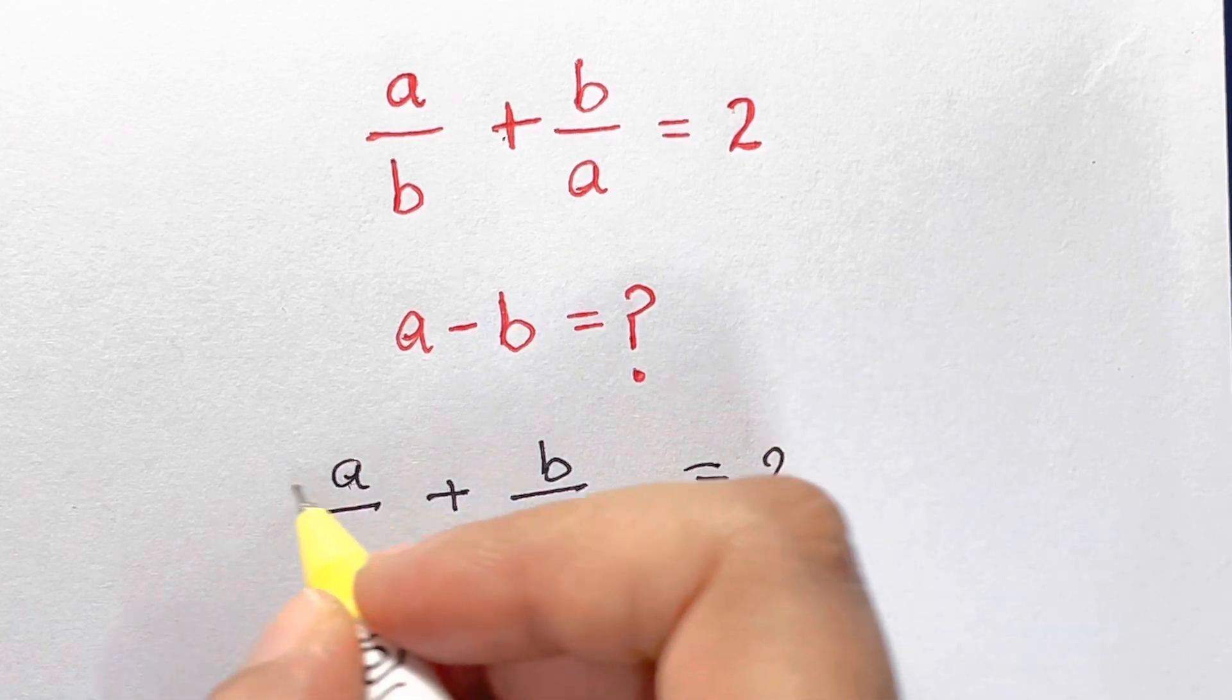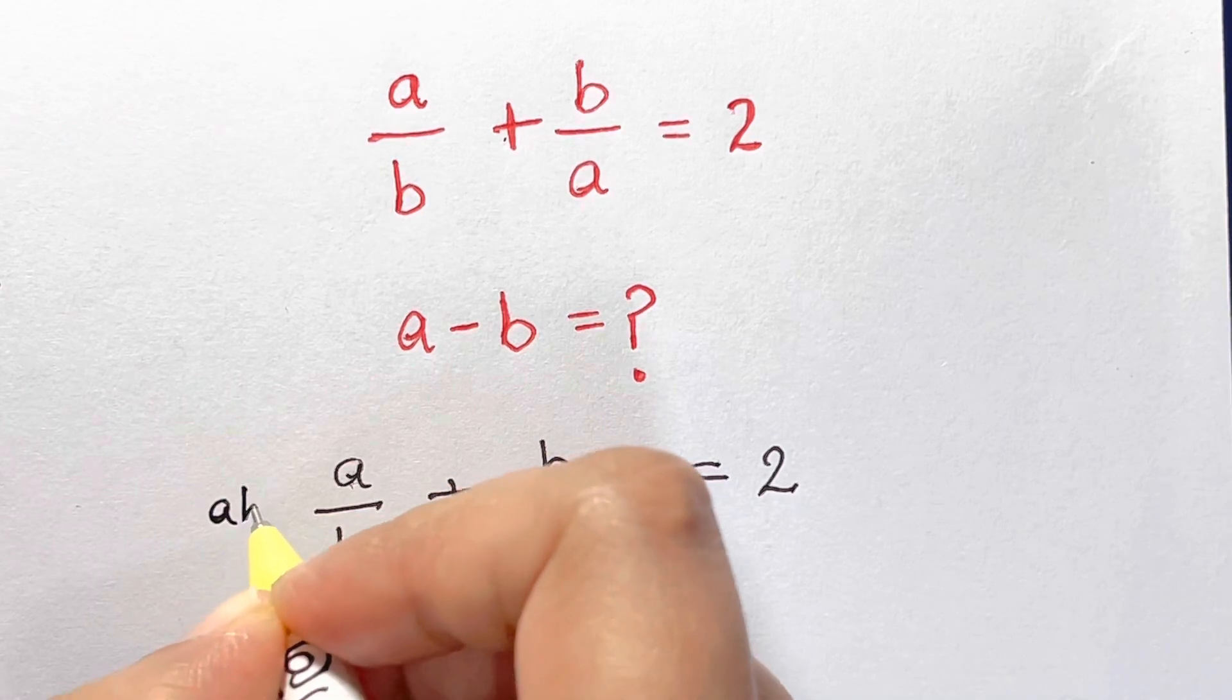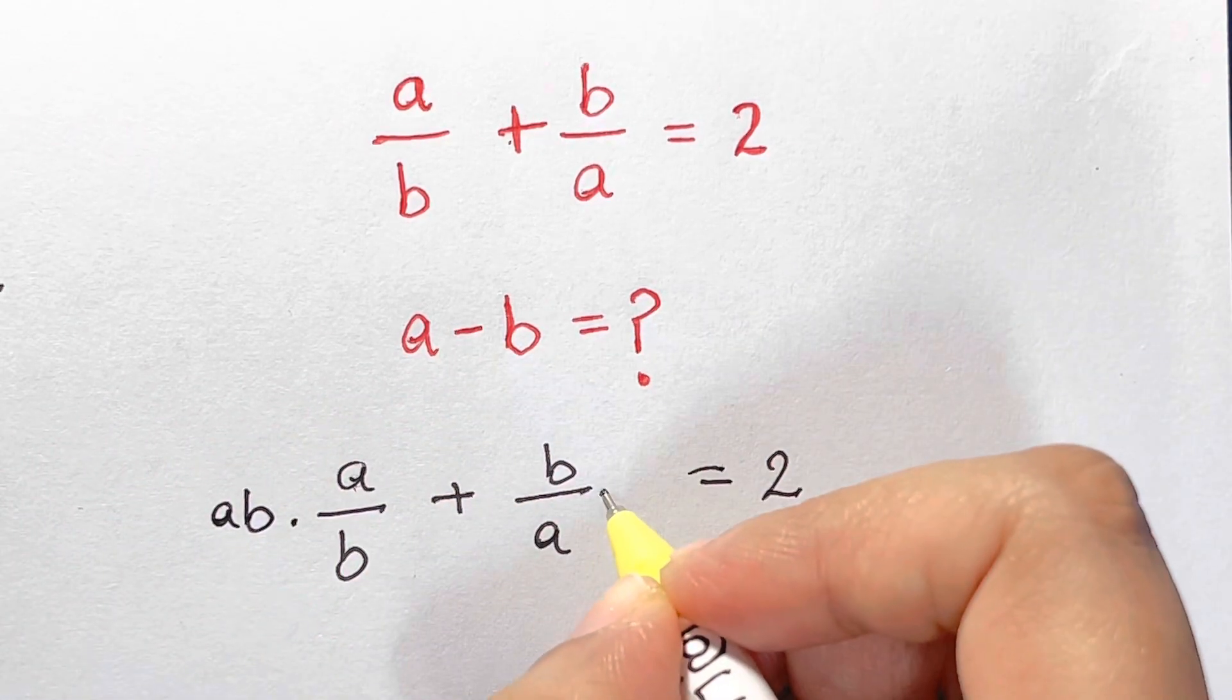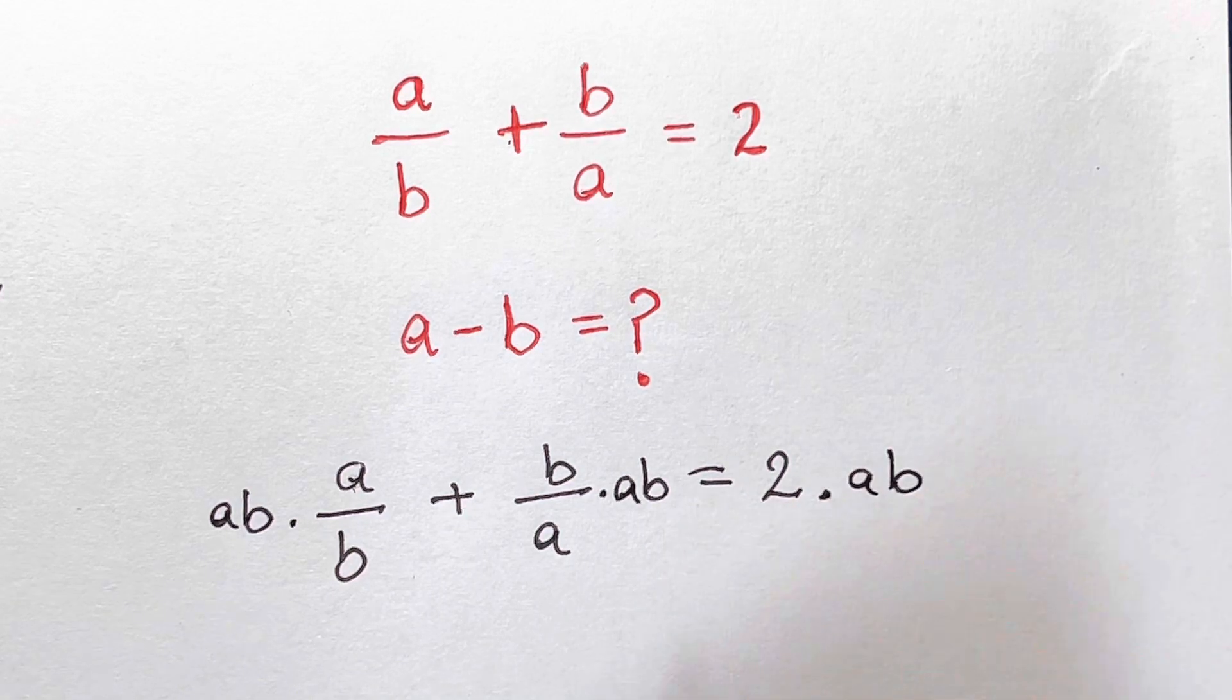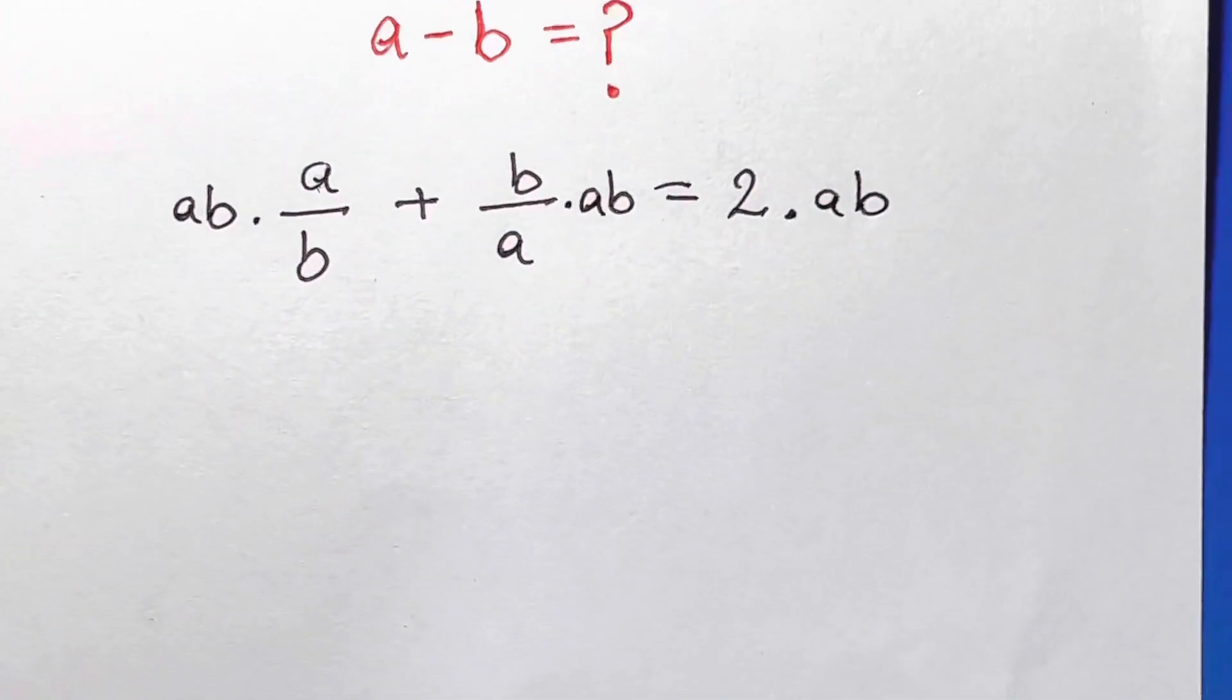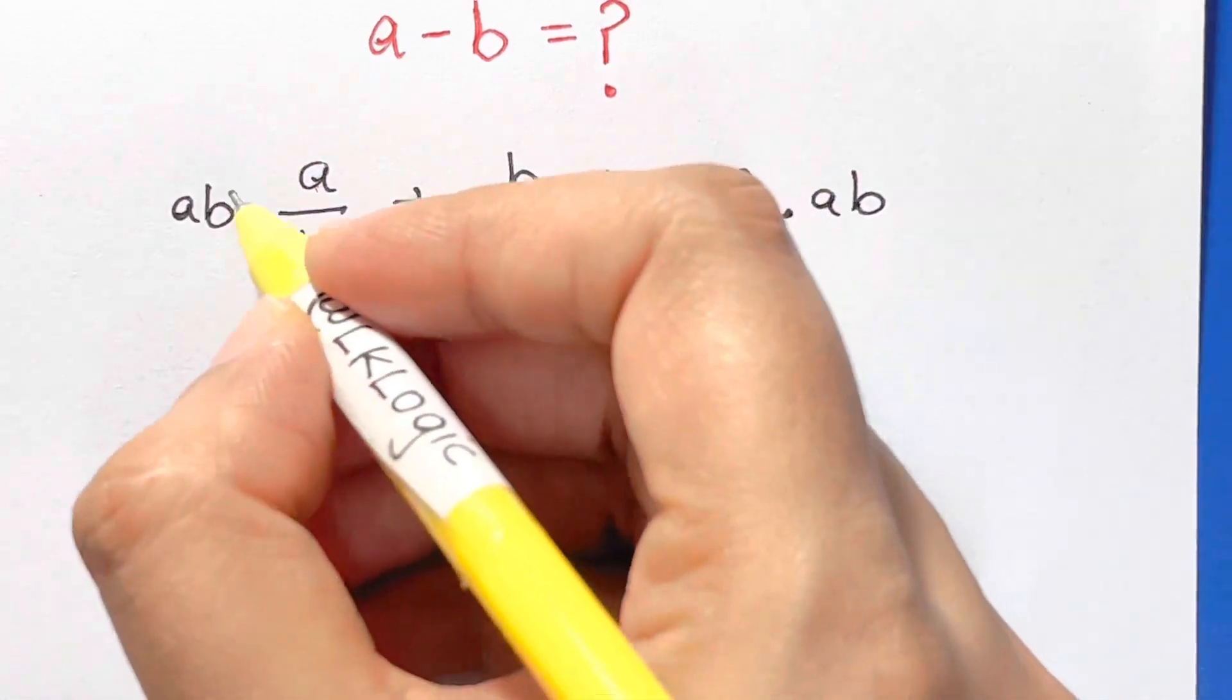If I take out the least common multiple, let me multiply it with that ab, and here as well ab, and here as well ab. So what happens when I do that?